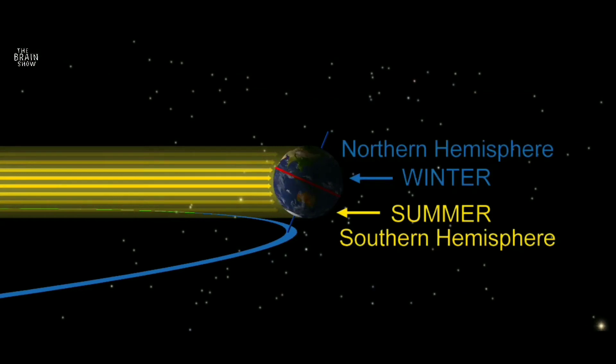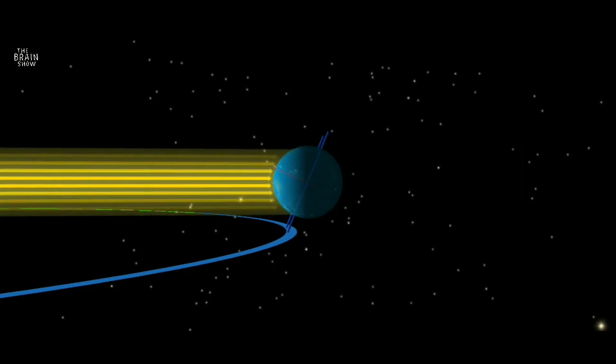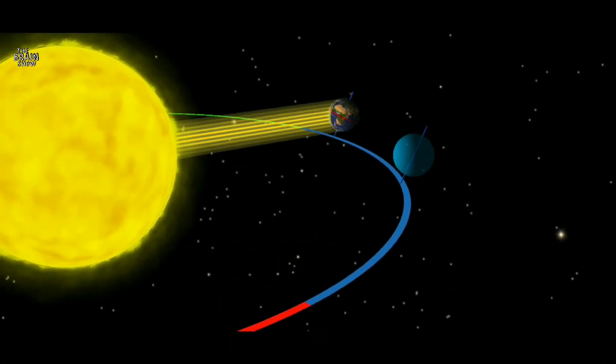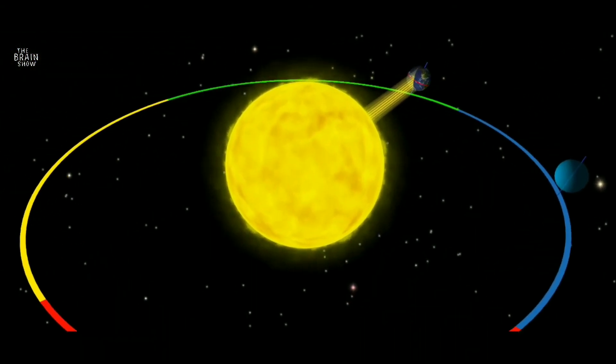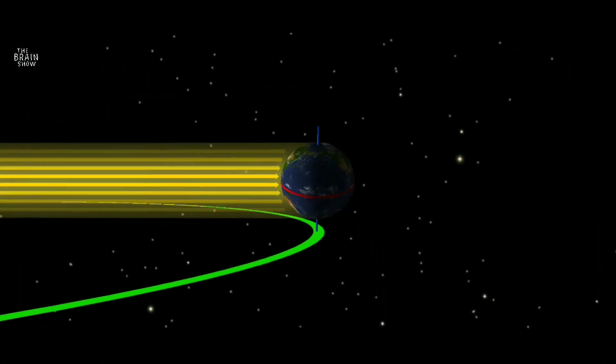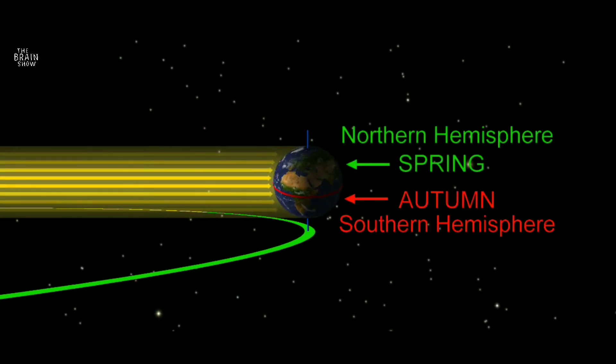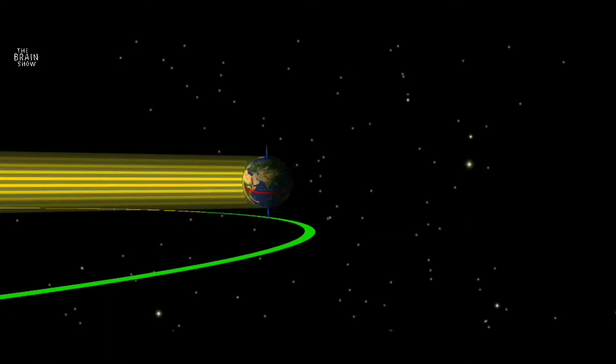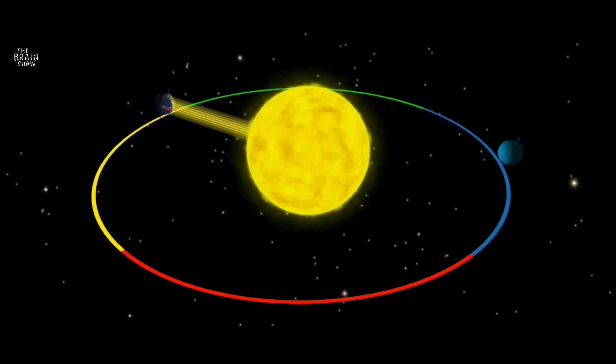When the Sun's energy heats the Northern Hemisphere less directly, it's winter. March 21st or 22nd is the vernal equinox. This is when the length of night and day is the same at all places on the Earth.